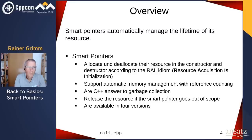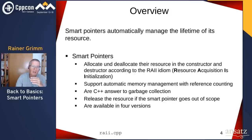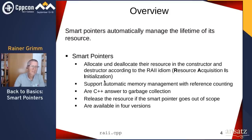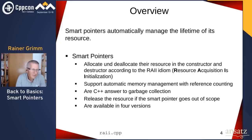We have smart pointers in C++ essentially since C++11. They are called smart because they are pointers but they also have a kind of smartness — they take care of the underlying resource. According to the RAII idiom — Resource Acquisition Is Initialization — they release the resource when the smart pointer goes out of scope. You can understand them as a kind of garbage collection in C++. We have them in four versions, but only three of them you should use.